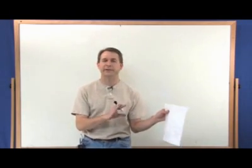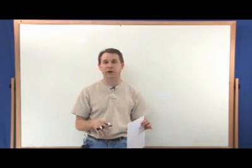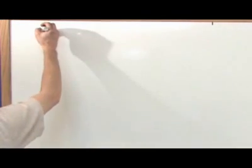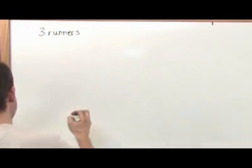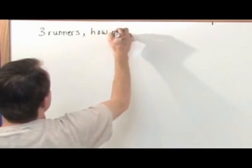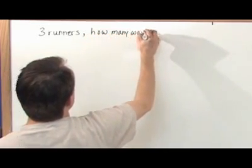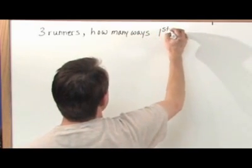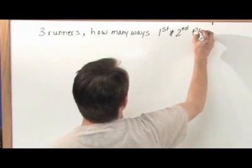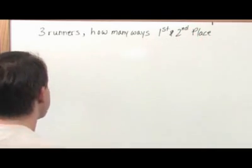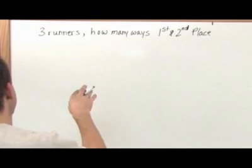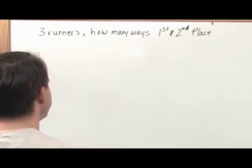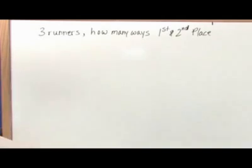Let's briefly review what we did last section because I'm going to draw some parallels to it. Let's talk about a race — we have three runners. How many ways can we get first and second place? You know this is a problem in permutations from the last section. This is a problem in permutations because there's a clear first and second place, and that's a big keyword that should tell you the order is going to matter.